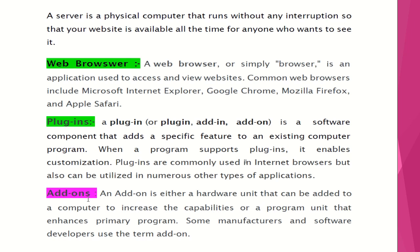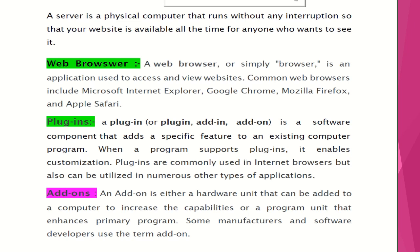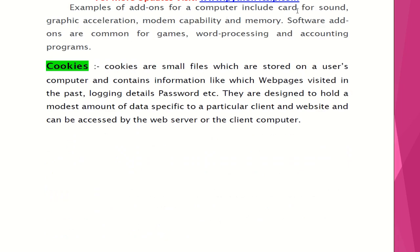An add-on is either a hardware unit that can be added to a computer to increase its capabilities, or a program unit that enhances a primary program. Examples of hardware add-ons include a biometric machine, a punching machine, and an OMR reader. Software add-ons include sound cards, graphic acceleration, modem capability, memory, as well as software additions like games, word processing, and accounting programs.